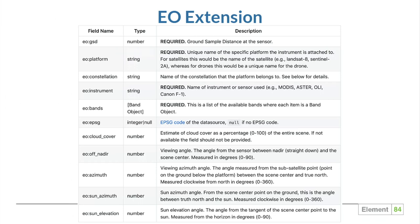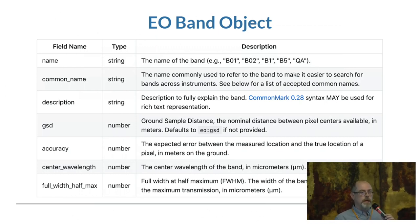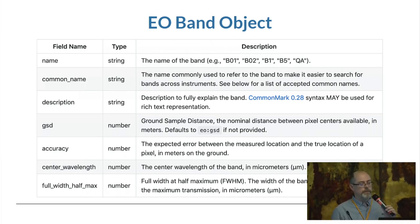If a field is the same for all items in a collection, you can take it out of the item and move it up to the collection. Cloud cover is not going to be the same among all your scenes, unless you have a collection of 0% cloud cover scenes. But things like platform, constellation, and instrument are commonly going to be put at the collection level. The EO band object is an array of dictionaries, and each one describes details about the actual band, such as the wavelengths and the resolution — because the resolution could be different depending on the band.